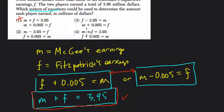If you add up their salaries, you get $3.95 million. If you take whatever Fitzpatrick is earning and add $0.005 million to it, you get McGee's earnings. That's what we just said right here.